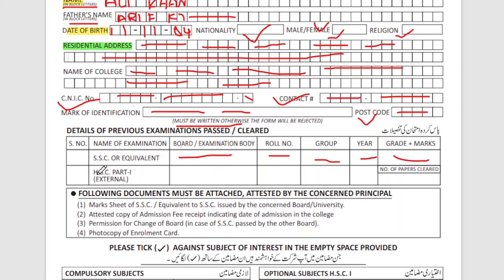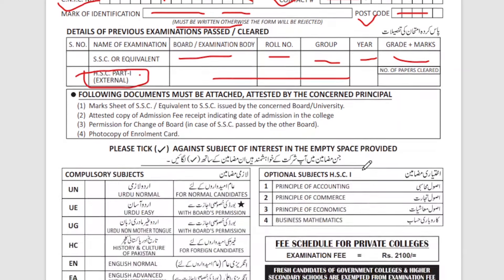If you are a student appearing for the first time, you have to leave the HSC Part 1 field blank. Otherwise, if you have a second attempt, a supply, a repeat, or an improvement, then you have to fill up this HSC Part 1 section. First-timers should leave it blank.